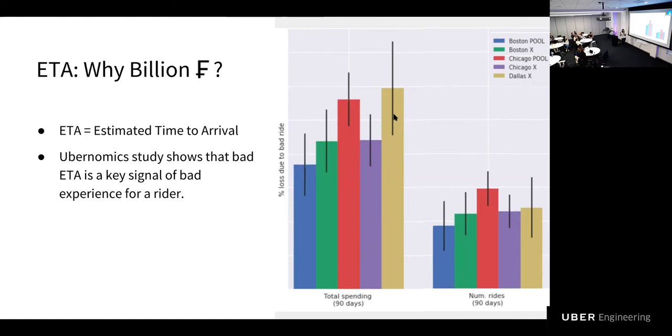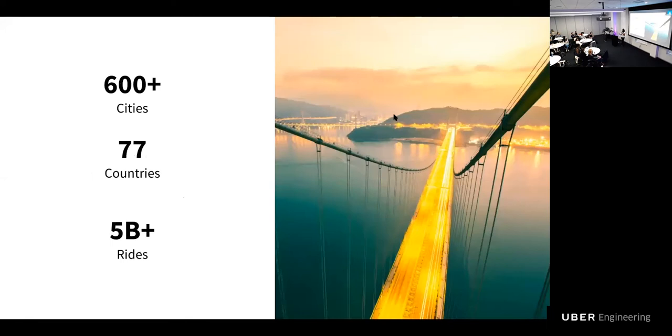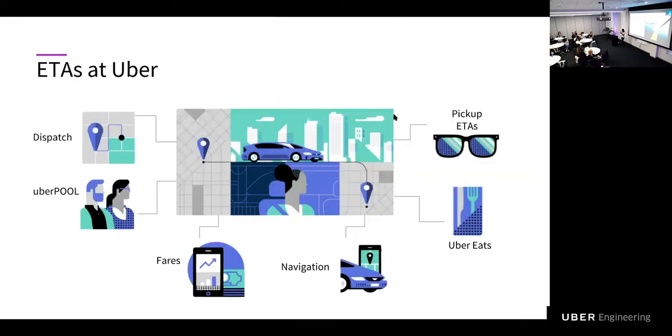And what we see is across different cities like Boston, Chicago, and Dallas, UberX and UberPool, bad ETA was really bad for users experience and their further interaction with Uber in terms of number of rides and the amount that they spent. The deal of this study was bad experience from ETA actually accounts to millions of dollars of loss in just these three cities in 90 days. And when you scale that number, and you think about the operations that we're at, which is 600 plus cities, 77 countries and 5 billion plus rides, that number really hits the billion dollar mark really fast. So this is the value of a good ETA.